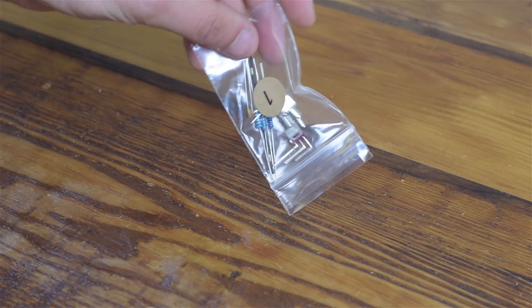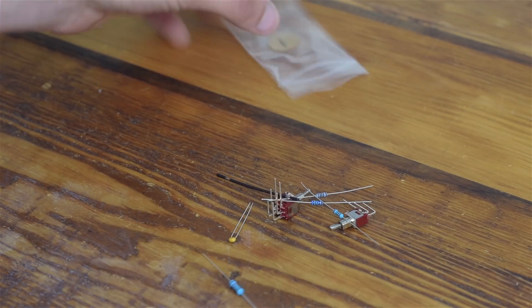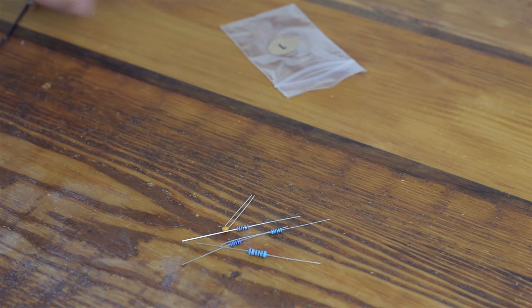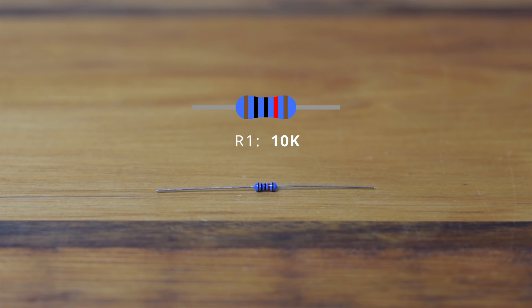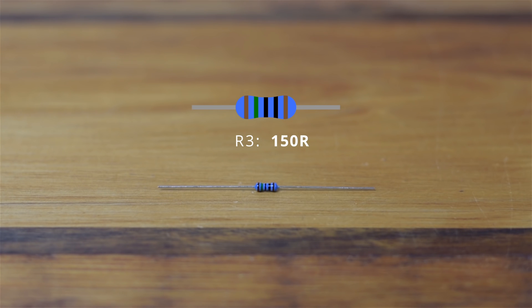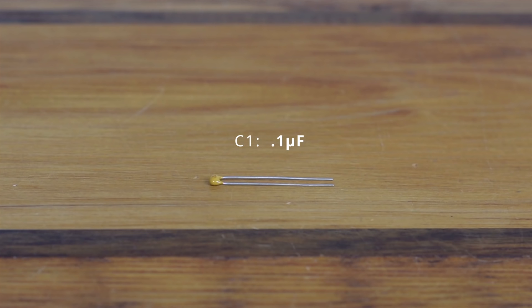Open Bag 1, which contains the four resistors and one capacitor that we'll populate first. Identify the resistors by the five bands on their body. R1 is 10k, R2 is 1k, R3 is 150, R4 is 100 ohms, and the capacitor is 0.1 microfarads.